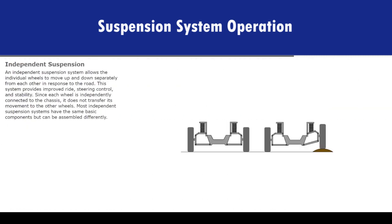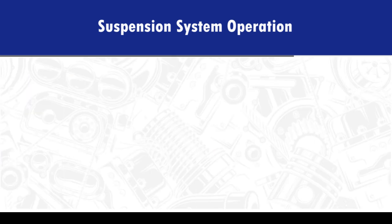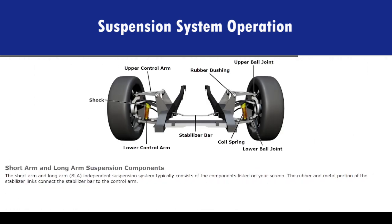An independent suspension system allows the individual wheels to move up and down separately from each other in response to the road. This system provides improved ride, steering control, and stability. Since each wheel is independently connected to the chassis, it does not transfer its movement to the other wheels. Most independent suspension systems have the same basic components but can be assembled differently. The short arm and long arm, or SLA, independent suspension system typically consists of the components listed on screen. The rubber and metal portion of the stabilizer links connect the stabilizer bar to the control arm.